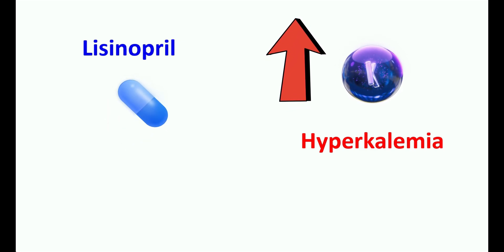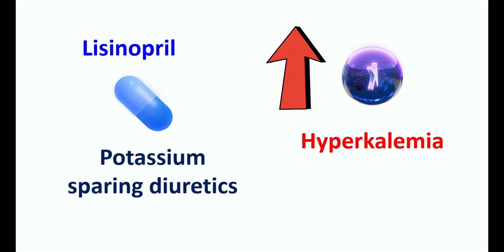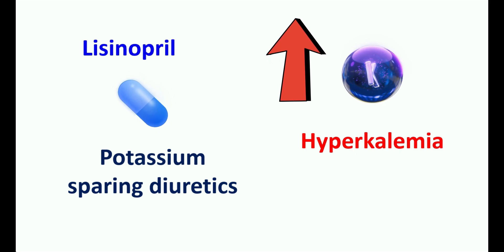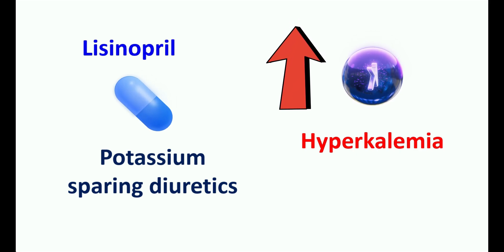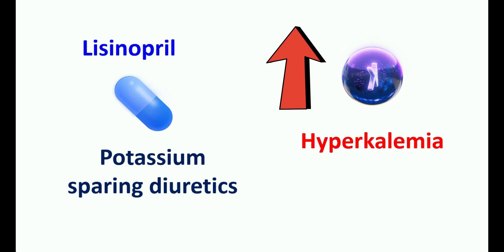Regarding potassium levels, lisinopril can affect potassium levels in the body. Since it affects renal functionality, it can elevate potassium levels, leading to hyperkalemia. This effect can be enhanced when taking lisinopril with other medications that also increase potassium levels, such as potassium-sparing diuretics like amiloride, spironolactone, and triamterene, or potassium supplements. Therefore, while taking lisinopril for longer periods, monitor your potassium levels and try to avoid potassium-rich foods.